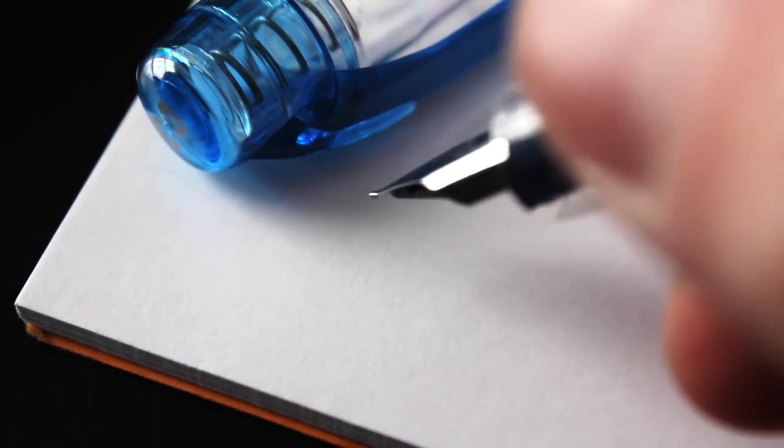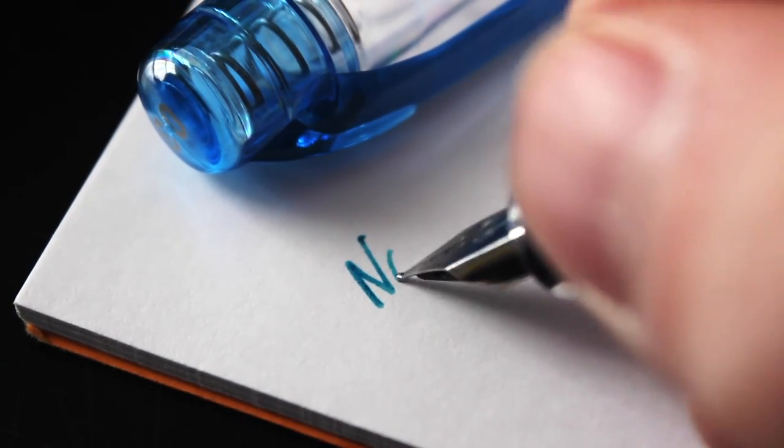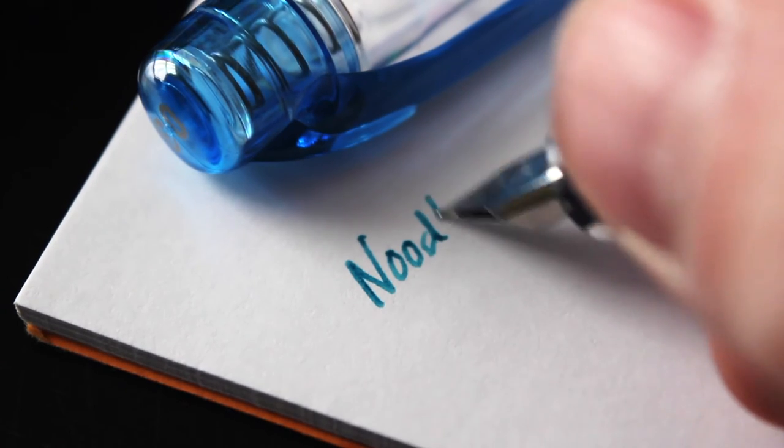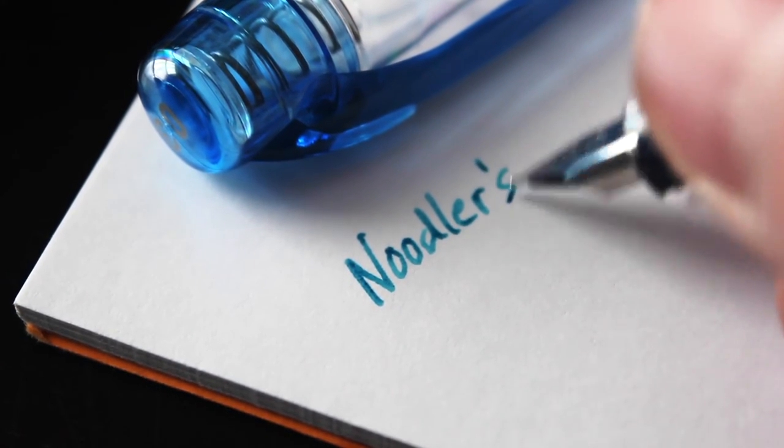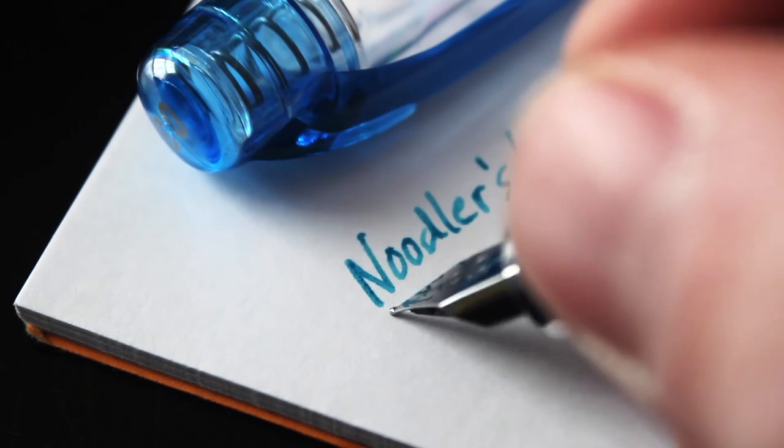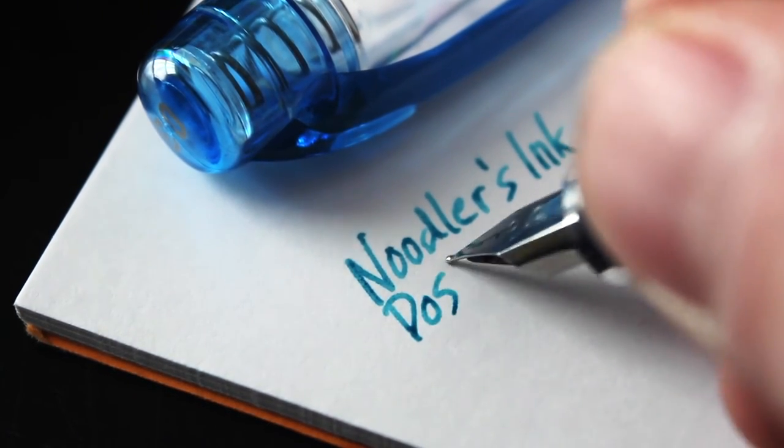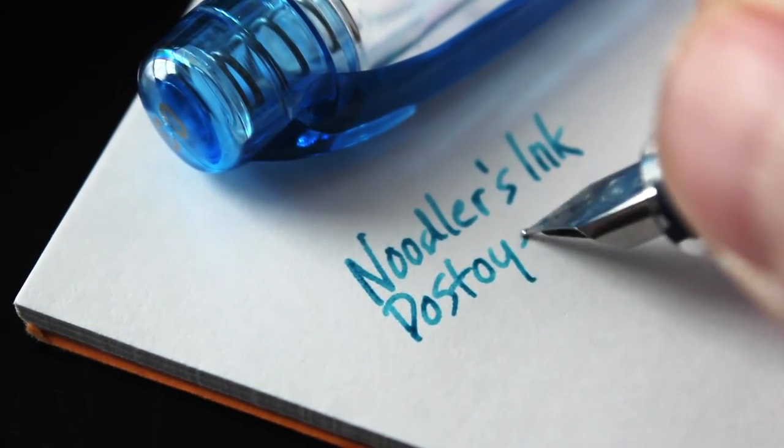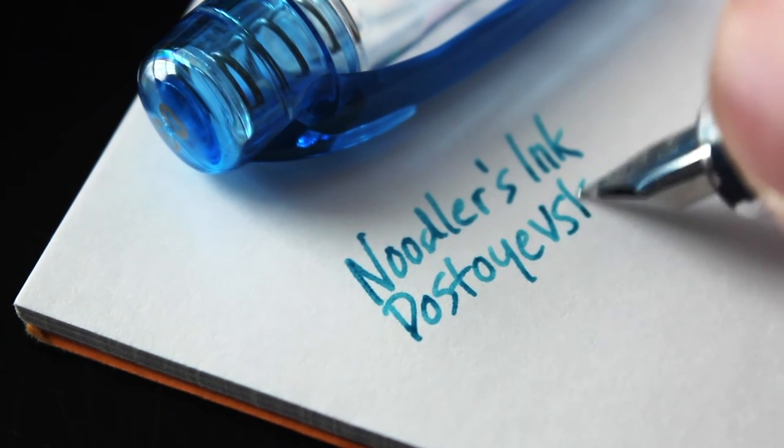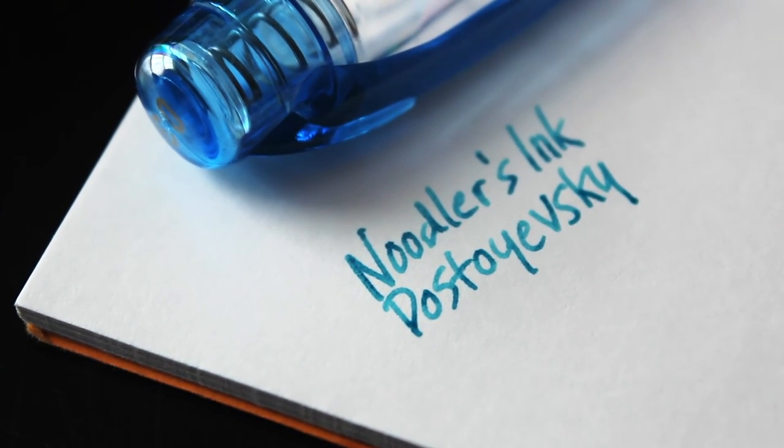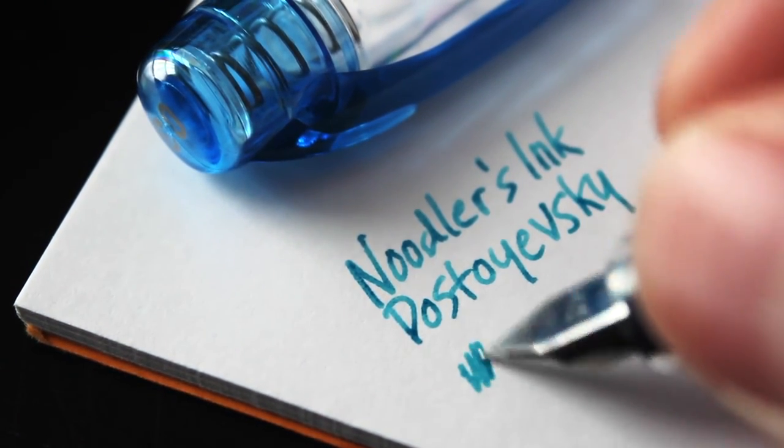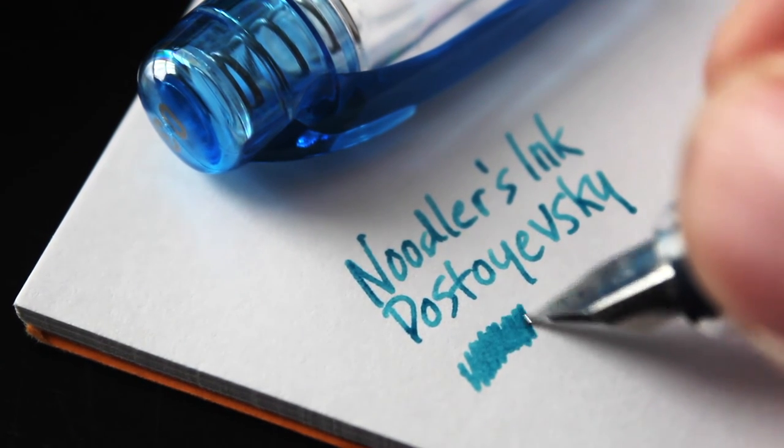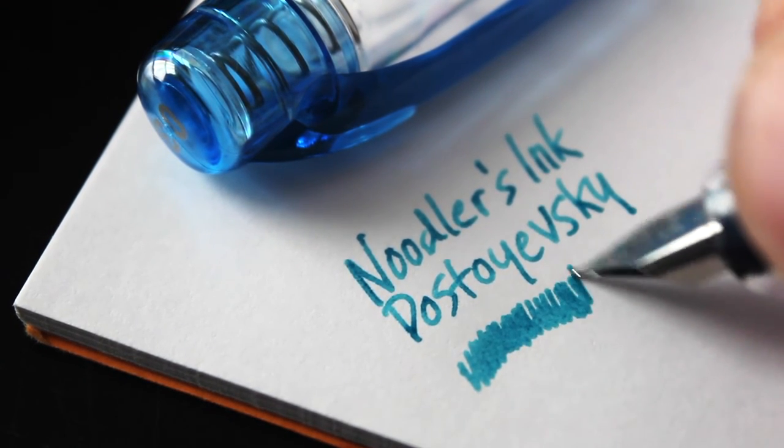The ink we used in this video is Noodler's Dostoyevsky, which was featured in our first Ink Flight Box that was done in February of 2017. This is a really cool light blue fountain pen ink that's got a good amount of shading to it. It's bulletproof and also has fluorescence under black light, which is really cool as well. And it looks nice coming out of this Platinum Preppy fountain pen, don't you think?